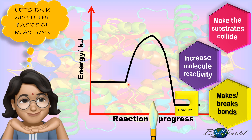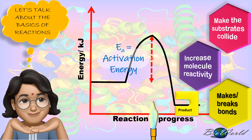So the increase in energy from the basic energy level of a substrate to the high energy level at the transition state is what we call activation energy. That is why most chemical reactions require high heat to enable a reaction to occur. But then, how do enzymes do it at 37 degrees Celsius? Let's find out.